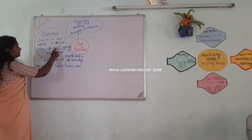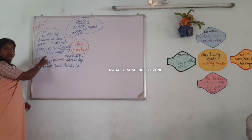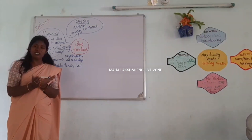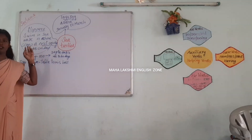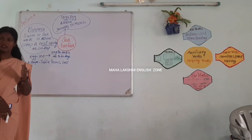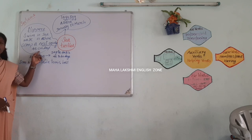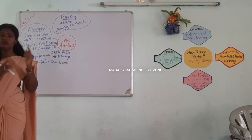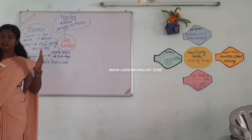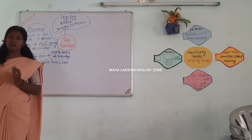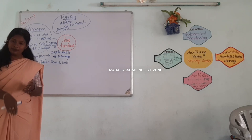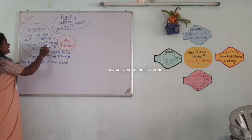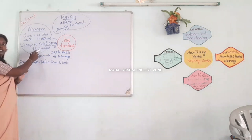The depth of the nest cavity is 45 cm. 45 cm means the length of one long-size scale. How deep is the nest cavity? 45 cm. The depth of the nest cavity is 45 cm.